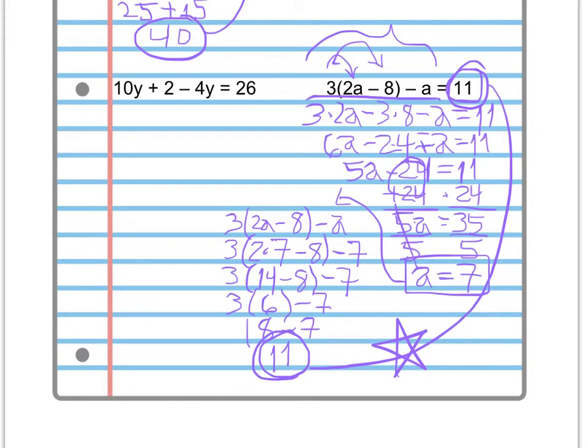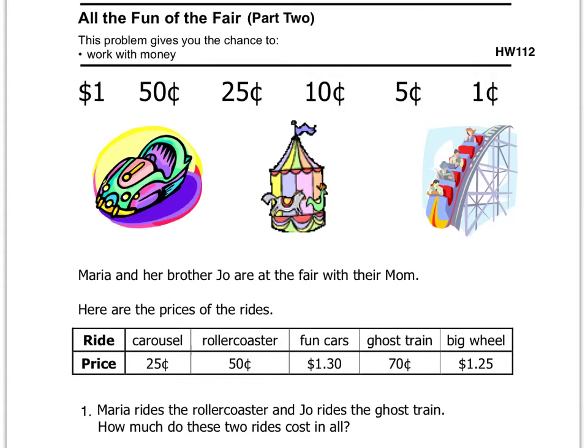We're going to go ahead and move on to the other side. And here we are on the other side. All the fun of the fair, part 2. Again, we're going to be working with money. You've got a dollar, 50 cents, 25 cents, 10 cents, 5 cents, and 1 cent. And some pictures of rides. It says, Maria and her brother Joe are at the fair with their mom. Here are the prices of the rides. So you can see all the prices here. Carousel is a quarter. Roller Coaster is 50 cents. Fun Cars is $1.30. Ghost Train is 70 cents. And Big Wheel is $1.25.